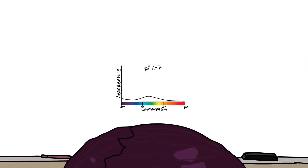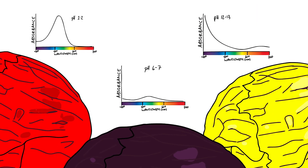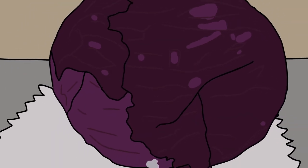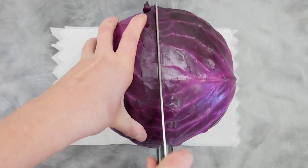Now the trick that the anthocyanins have up their sleeve is that the colors absorbed and reflected will change with the pH or acidity of the solution. But to investigate this effect and figure out why it works, first we need to get the anthocyanins out of the cabbage.